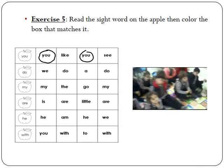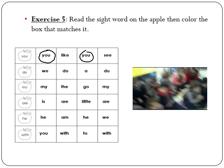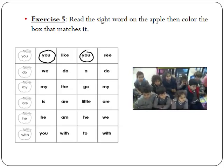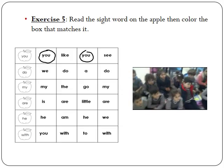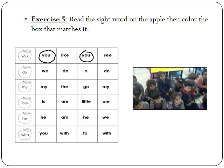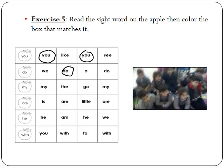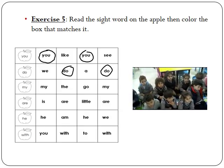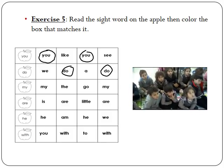What about the last one? See. Should I circle the word see? No. Let's move to the second apple. What do you see on the second apple? Do. So let's search for the boxes that have the word do. What's this? We. Should I circle it? No. Let's move to the second one. Do. What about this one? Do. I want to hear high voices. No. Very loud voice. No.